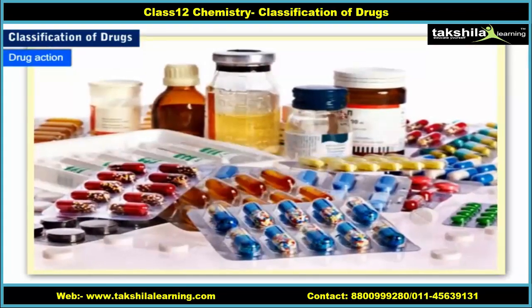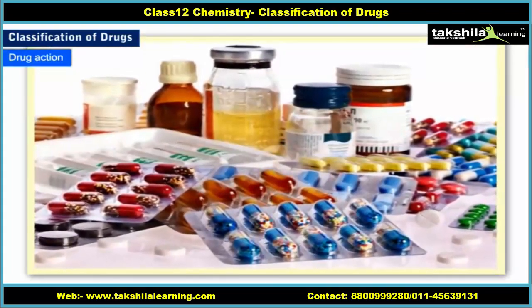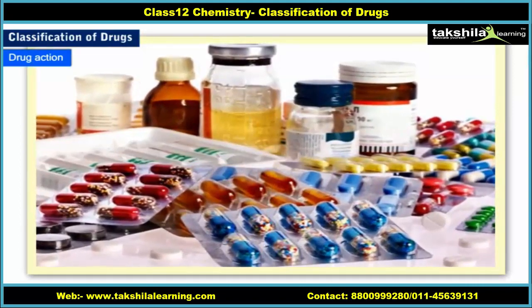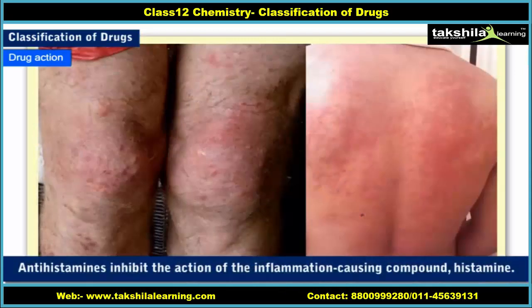Drugs can also be classified on the basis of their action on a particular biochemical process. For example, antihistamines inhibit the action of the inflammation-causing compound histamine.